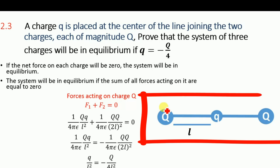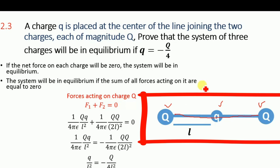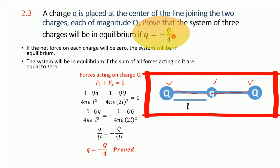We have a system of two charges, each of magnitude Q — both have the same magnitude. This is the line joining these two charges. If we place a small charge q at the center of that line, it is stated that the system will be in equilibrium if this small charge is equal to minus Q divided by 4. We will now prove this.